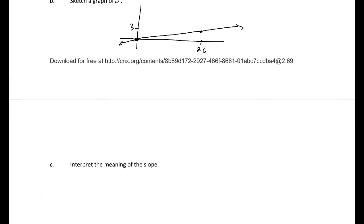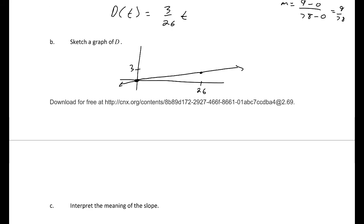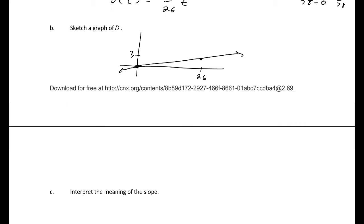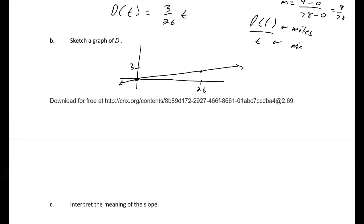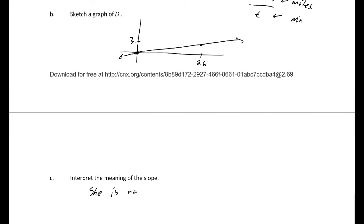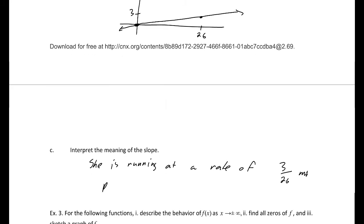Now interpret the meaning of this slope. The slope of 3/26 means that every minute she runs 3/26 of a mile, since our d(t) is in miles and time is in minutes — so the slope is in miles per minute. Because we assumed a constant pace, this is actually her average velocity.